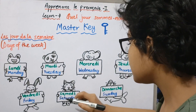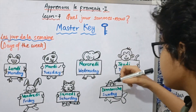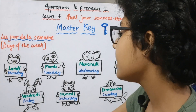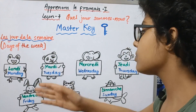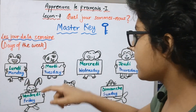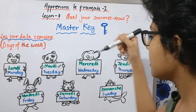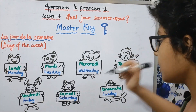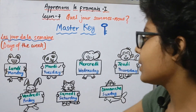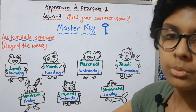When we come to the weekends, Saturday is samedi and Sunday is dimanche. So now we have learned all the seven days of the week. Let us read them once again: lundi, mardi, mercredi, jeudi, vendredi, samedi, dimanche. Here we have completed les jours de la semaine.